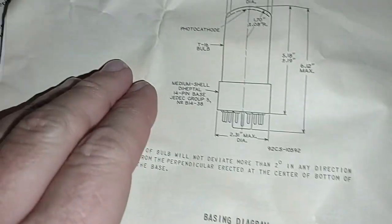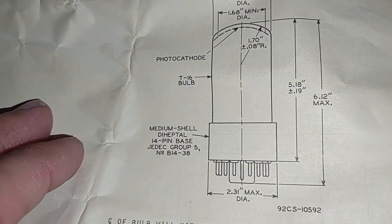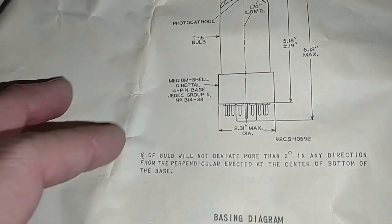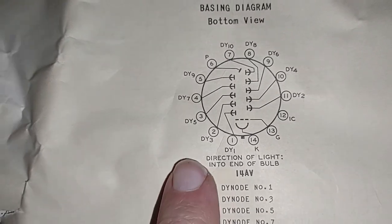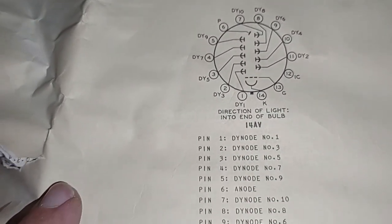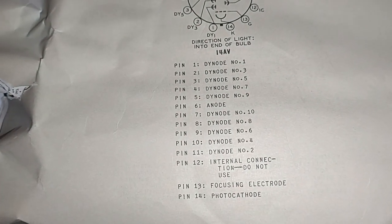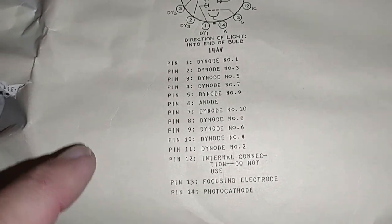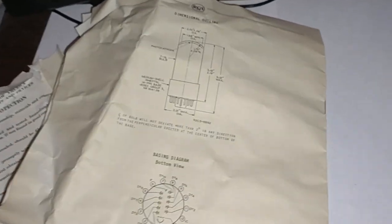Here we go, and here's the back page. This looks like a mechanical drawing, the size of the tube. Here is the pinouts and what they're connected to. It tells the pins and the dynode that they're connected to, and the elements of the tube: the focus electrode, photocathode, etc. Very cool, so there is our document.